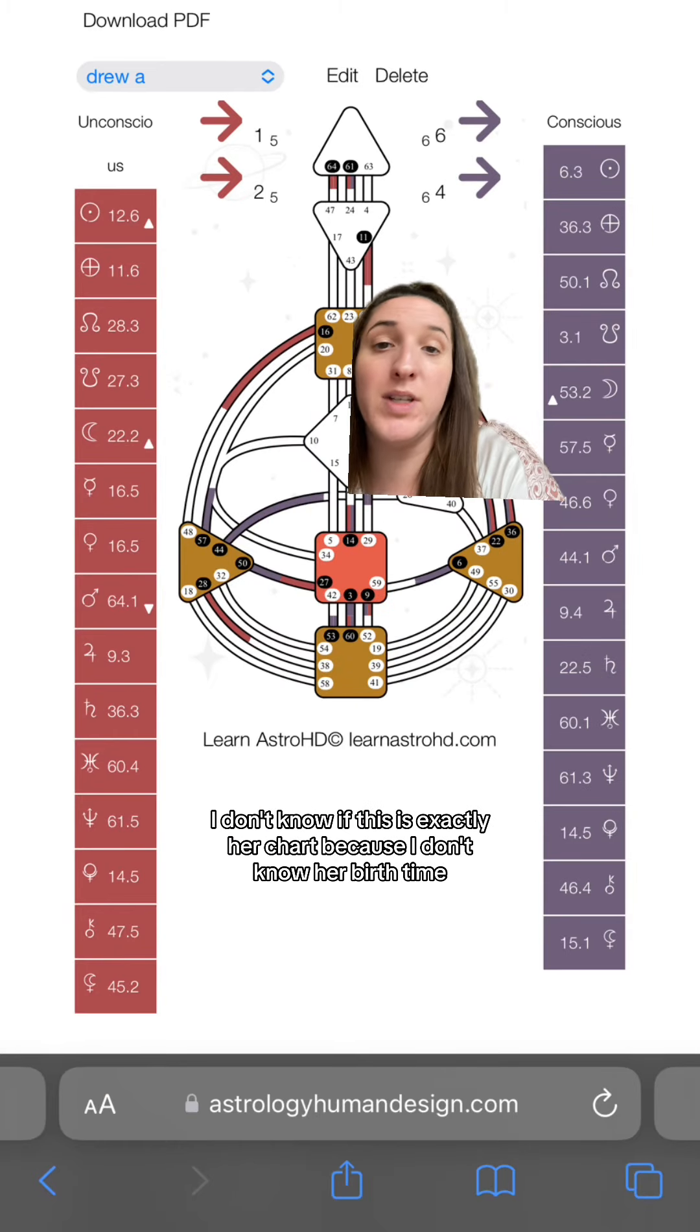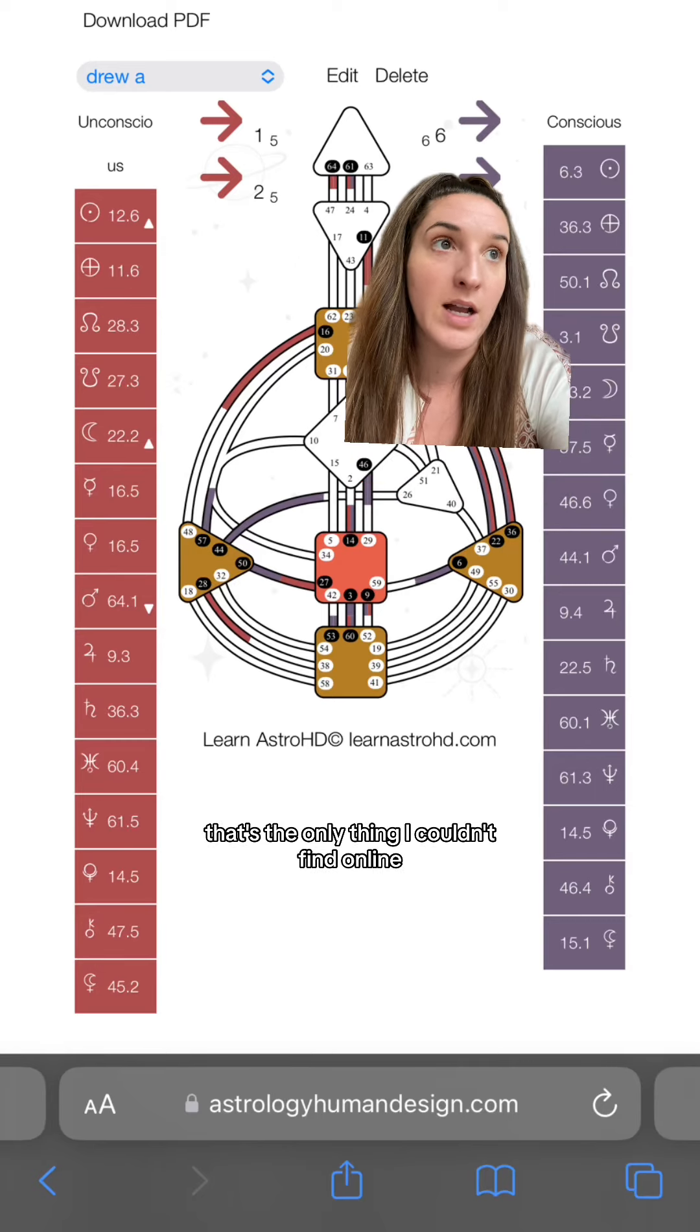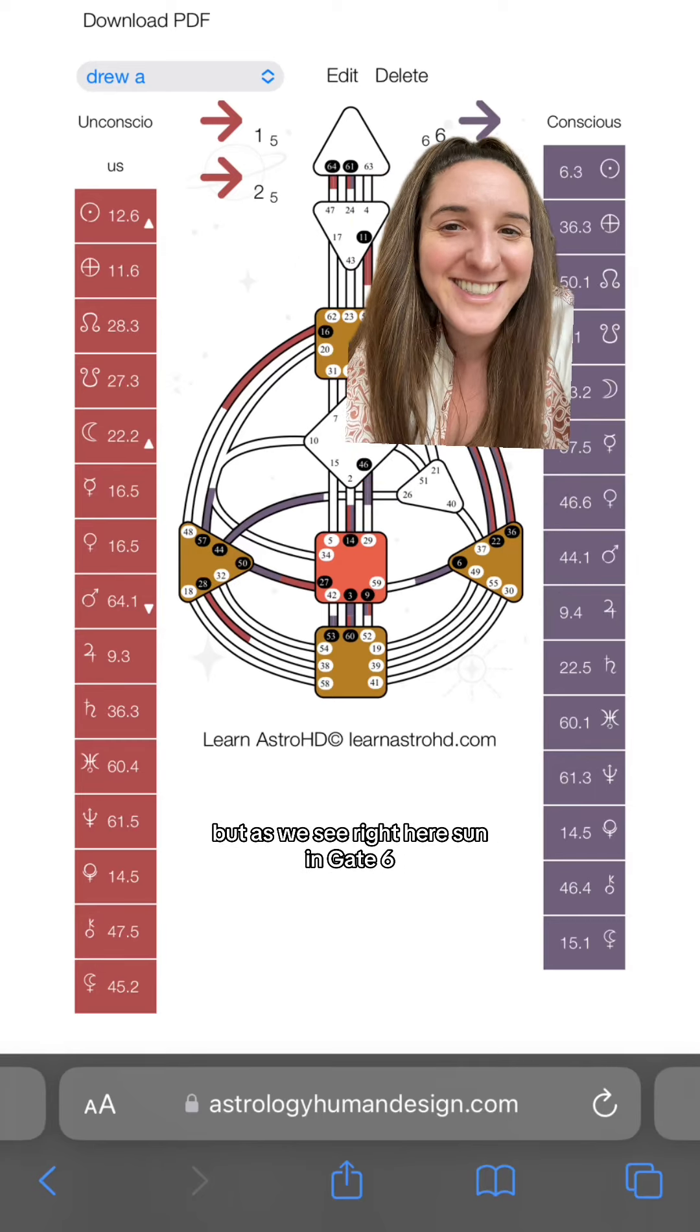Now I don't know if this is exactly her chart because I don't know her birth time—that's the only thing I couldn't find online. But as we see right here, sun in Gate 6.